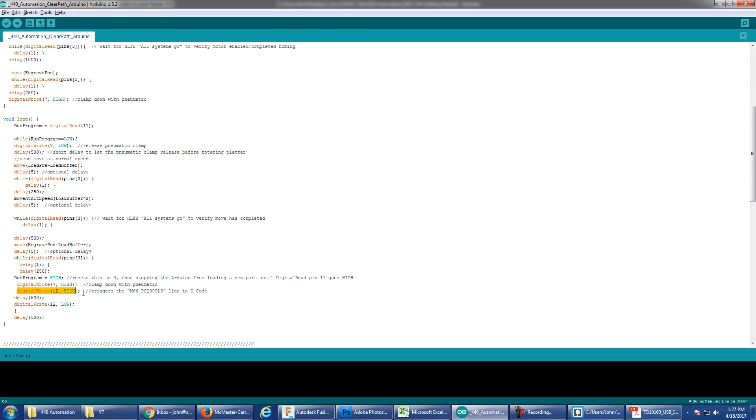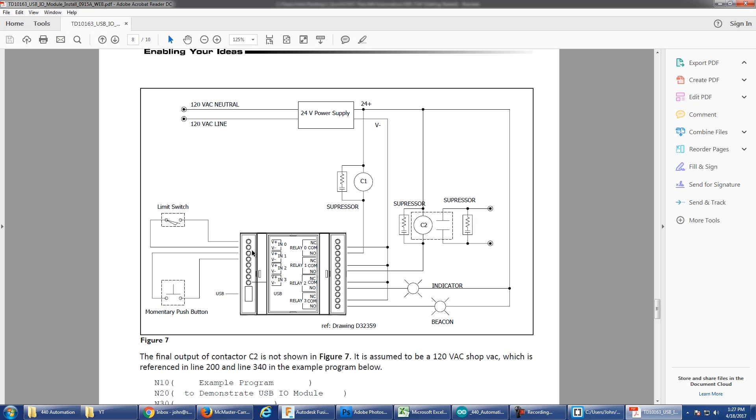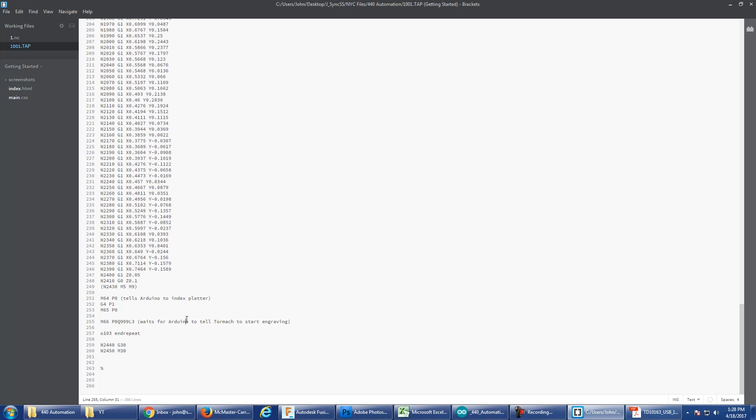And then this is the cool part to me because it's bi-directional communication. I write digital pin high, and that triggers this line in the G-code. M66P whatever. So that's the input on the USB IO device. So the other left side here is telling it, okay, Arduino is now saying I'm done. I've rotated the platter around. When I've rotated it, that means I've dropped a clamp off. I've picked up a new clamp. I've made it back to the engraved position. PathPilot, you're allowed to go ahead and run the next part. In between there, we just have a short pause, kind of like a debounce.